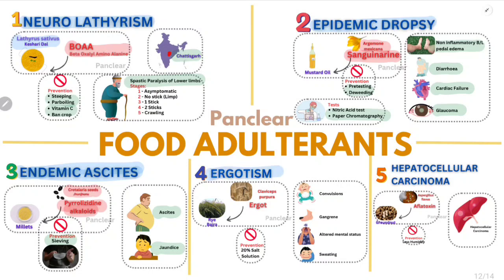Fourth, ergotism: caused by Claviceps purpurea, which contains ergot alkaloids. It can lead to convulsions, gangrene, altered mental status, and sweating. Prevention: by using 20% salt solution. Fifth and final: hepatocellular carcinoma due to aflatoxin from Aspergillus flavus attacking groundnuts. Prevention: by decreasing the humidity of the storage place.